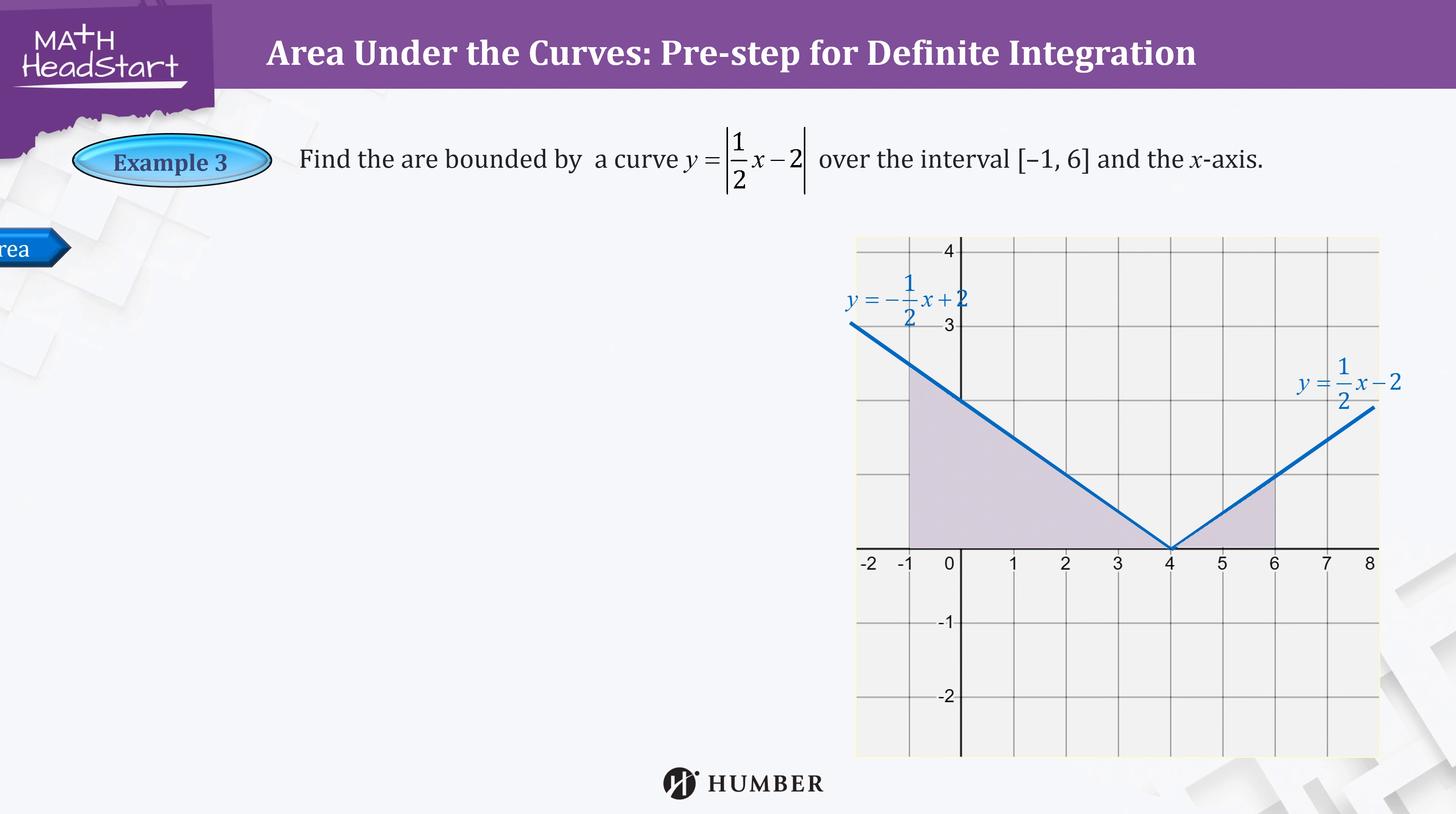We now find the areas of the two triangles with each base and height using the formula. The base of the left triangle is the distance of two x-coordinates, -1 and 4, which is 5. And the height is the y-value at x = -1, so we substitute -1 into y = -1/2x + 2 to get 5/2.